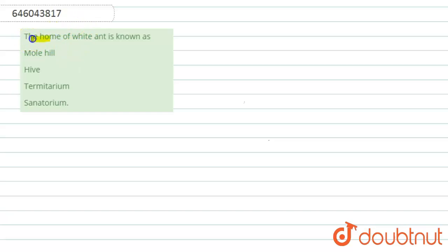is: the home of white ant is known as? Option 1 is molehill, option 2 is hive, option 3 is termitorium, and option 4 is sanatorium. So when we talk about the white ant, actually white ant